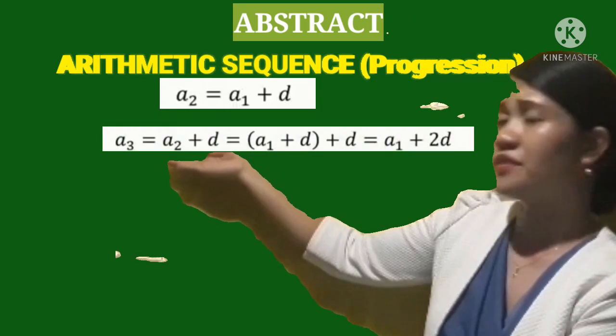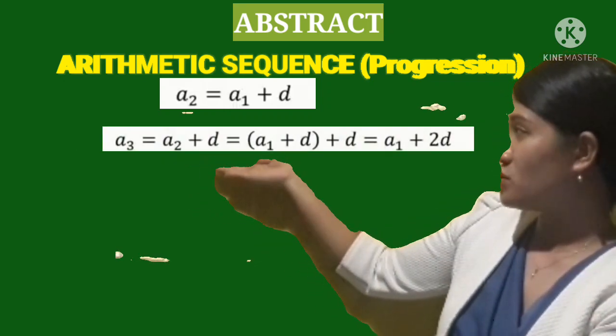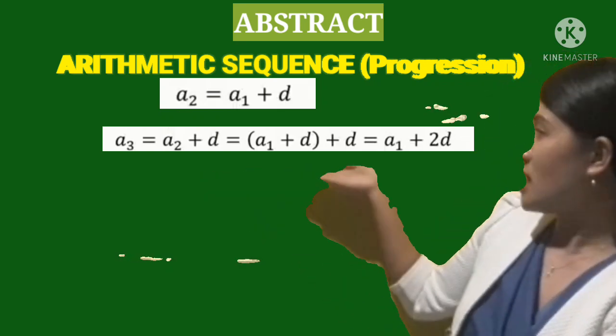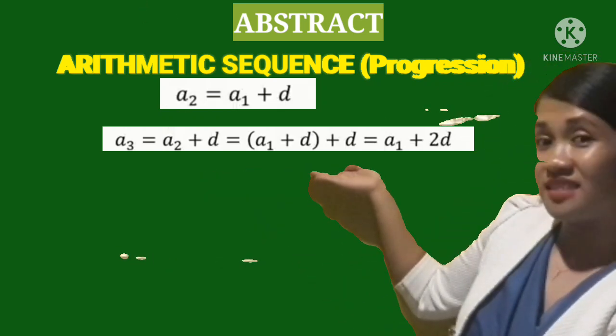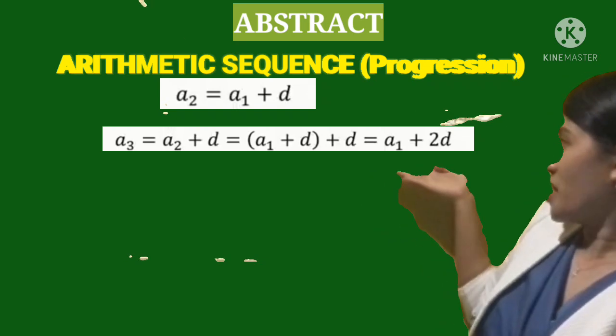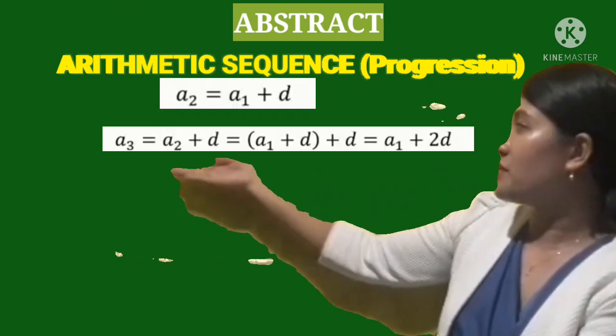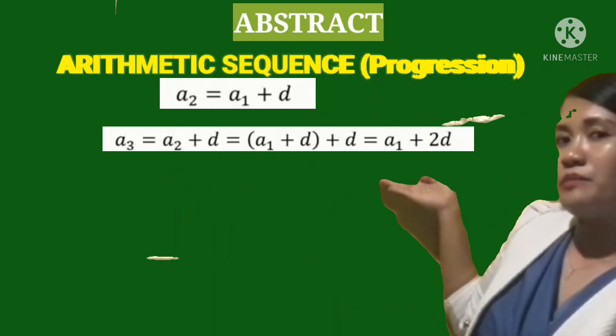Then A sub 3, the third term, is equal to A sub 2 plus d. And take note that A sub 2 is equal to A sub 1 plus d. Copy the d. So we have A sub 1, d plus d is 2d. So A sub 3 is equal to A sub 1 plus 2d.